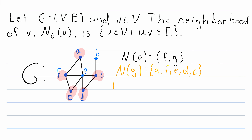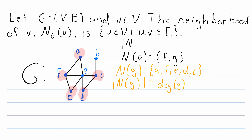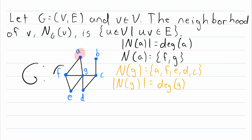Clearly, by definition, the cardinality of the neighborhood of a vertex is equal to the degree of that vertex. Remember that the degree of a vertex is the number of vertices it is adjacent to, and every one of those adjacent vertices will be in that vertex's neighborhood. The same thing holds for vertex A — the cardinality of the neighborhood of A equals the degree of A. There are two elements in the neighborhood of A, and A has a degree of two.